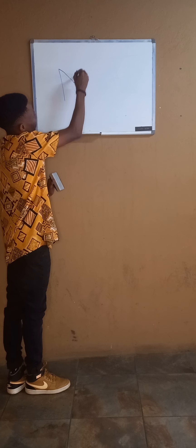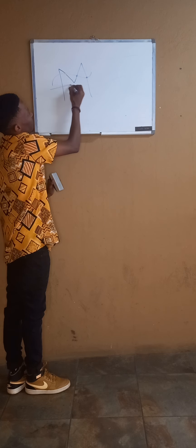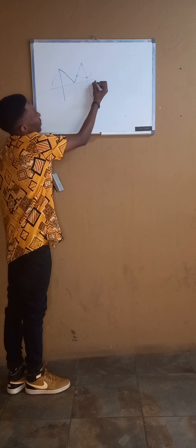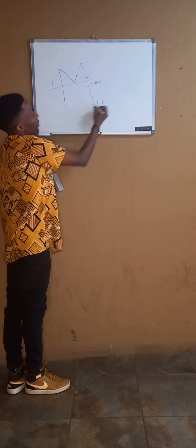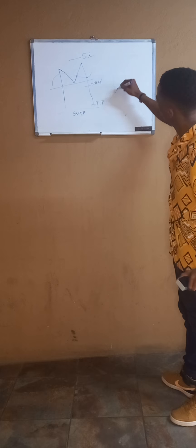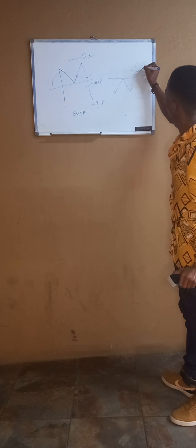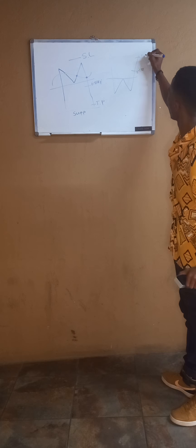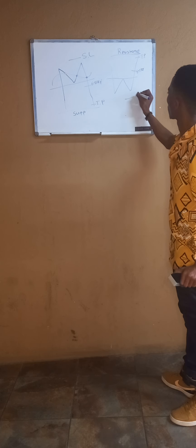In conclusion, for a double top: you have your first touch, second touch, third touch, your neckline — entry below the neckline, take profit at the support level, and stop loss above your pattern. For a double bottom: neckline above — entry above the neckline, take profit at the resistance level, and stop loss must be below your pattern.